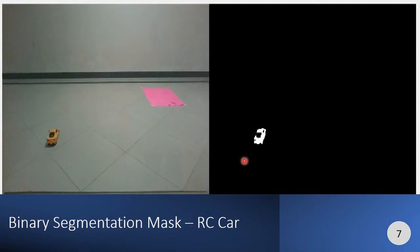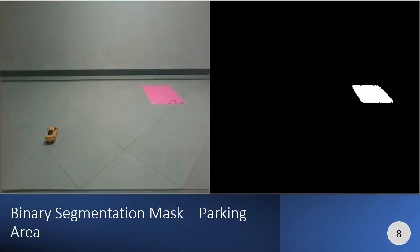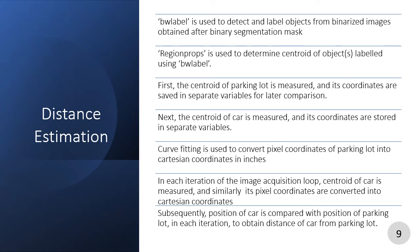The binary segmentation mask for the RC car has detected and separated the car from the rest of the frame, including its final desired position or the parking lot, which is marked by a paper. Similarly, the binary segmentation mask detects and segments the parking lot from the rest of the frame. Once we detected our objects, we used region props to determine their centroids or pixel coordinates and then converted these pixel coordinates to Cartesian coordinates using our curve fitting models. The curve fitting models take pixel coordinates of a point on the floor and return its distance along the x and y axes in inches.